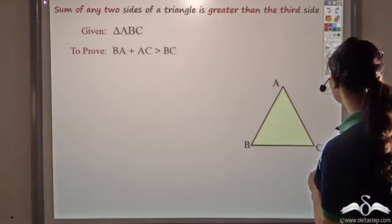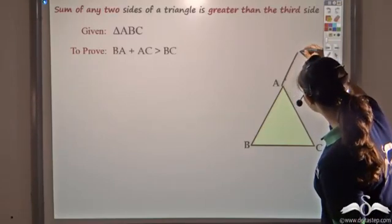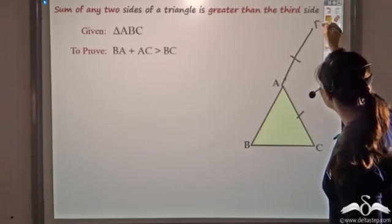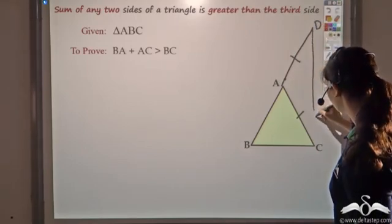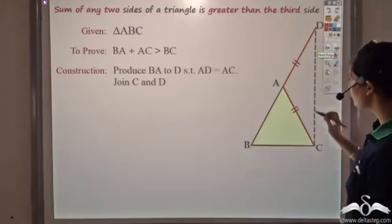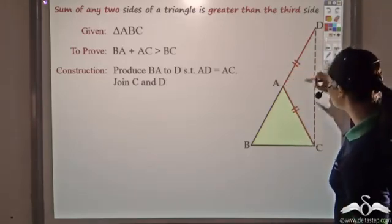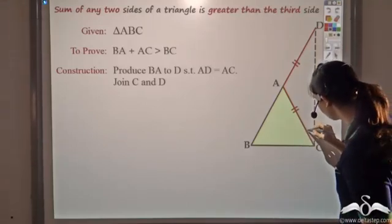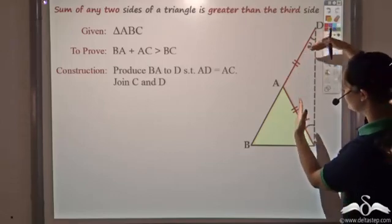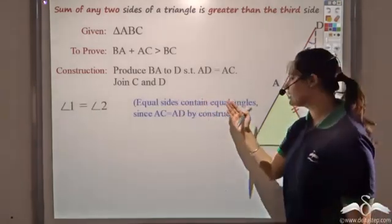To start the proof, let me produce line BA and draw it such that AD equals AC — let's call this new point D — and then join D and C. Now in triangle ACD, we have two equal sides: AC equals AD. With two equal sides, we get two equal angles. Let's call them angle 1 and angle 2. Since AC equals AD, equal sides contain equal angles, so angle 1 equals angle 2.